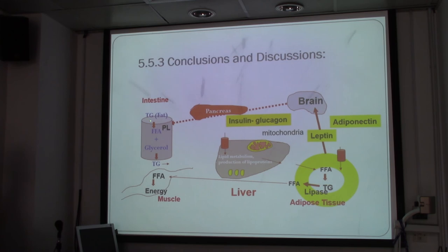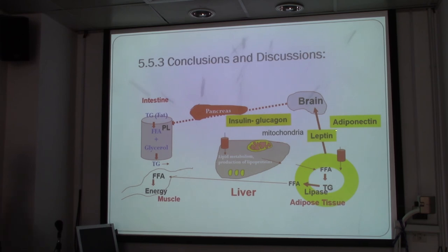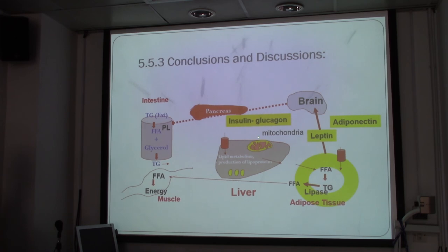In the intestine, fat or triacylglycerol is broken down into fatty acids, which reform TG and then go to muscle where fatty acids are used to produce energy. Adipose tissues also produce fatty acids for the muscles, as adipose tissue stores triacylglycerol and lipase produces fatty acids from it. Leptin and adiponectin are also released into the brain, which controls the pancreas to release insulin and glucagon. The liver uses lipid metabolism to produce lipoproteins. This represents the normal controlled situation involving the pancreas, insulin, and glucagon.